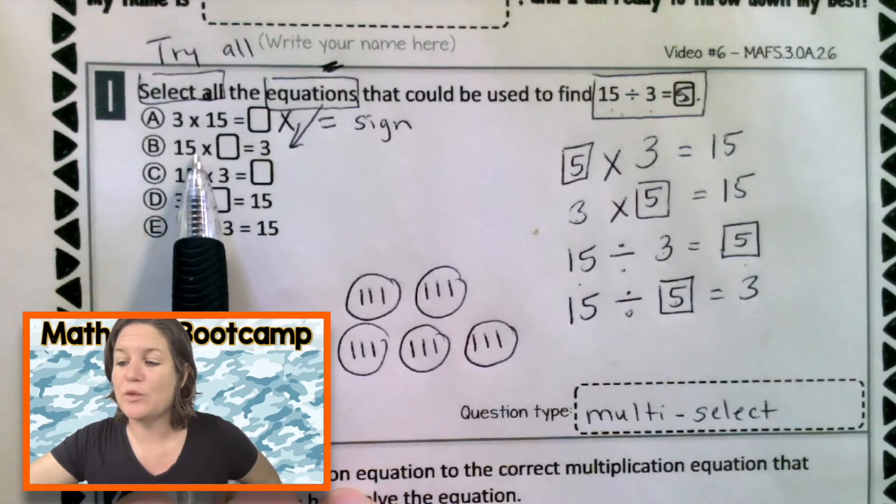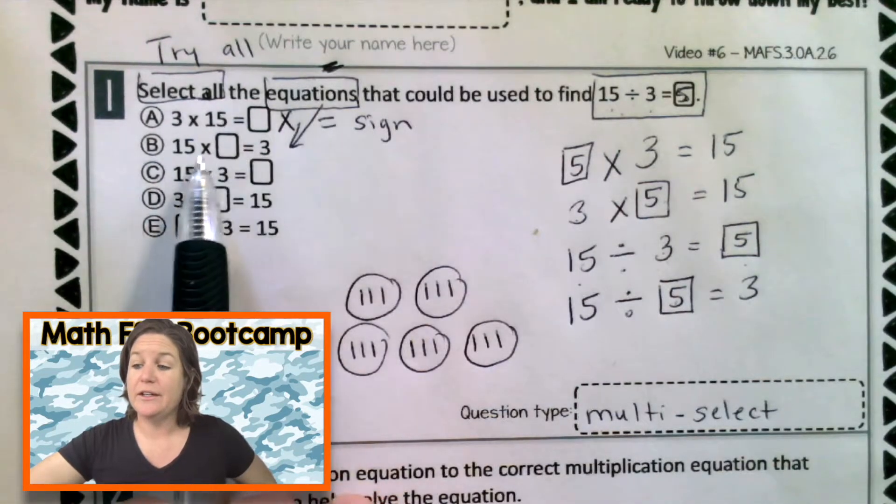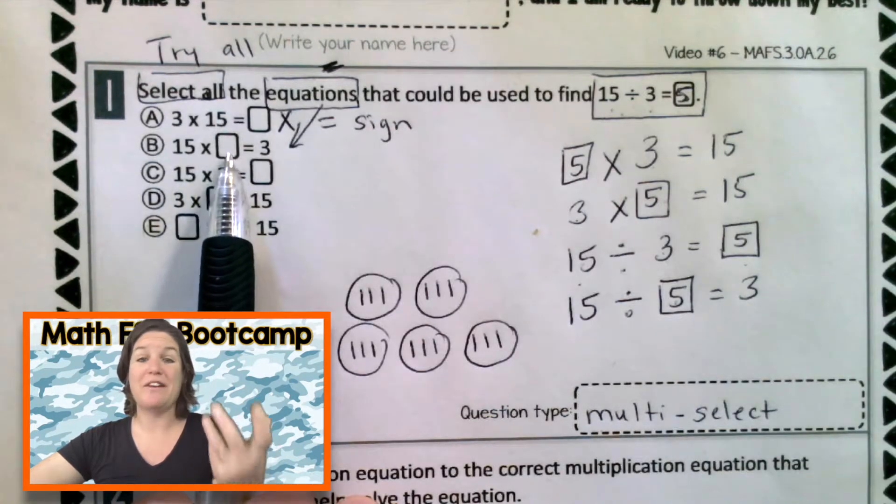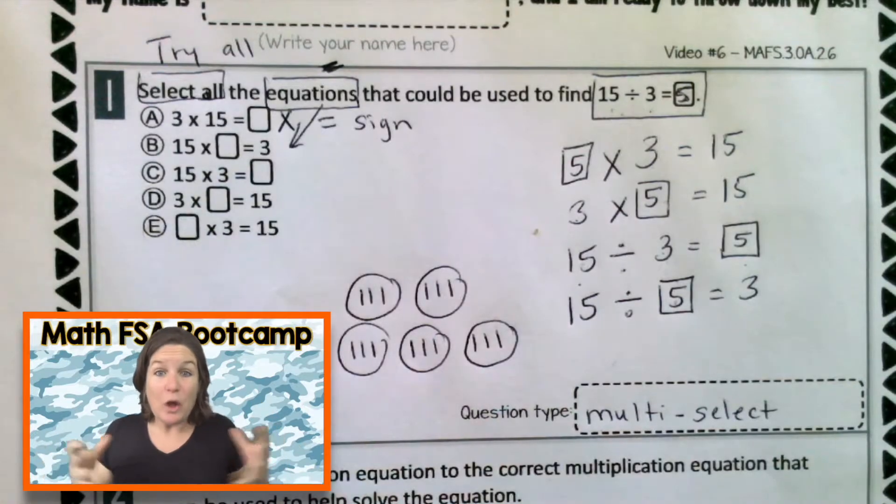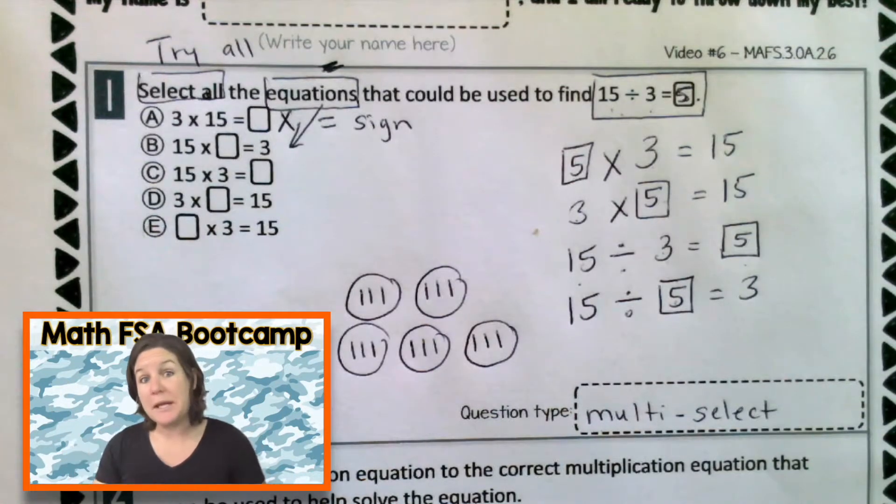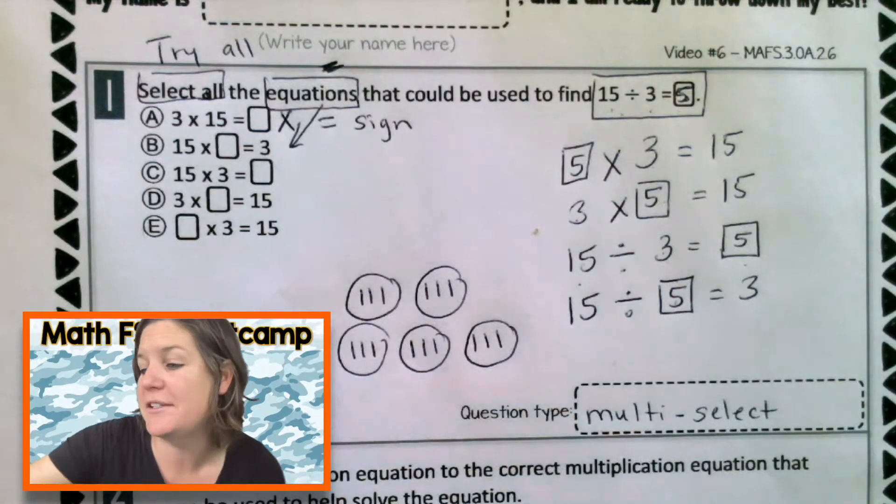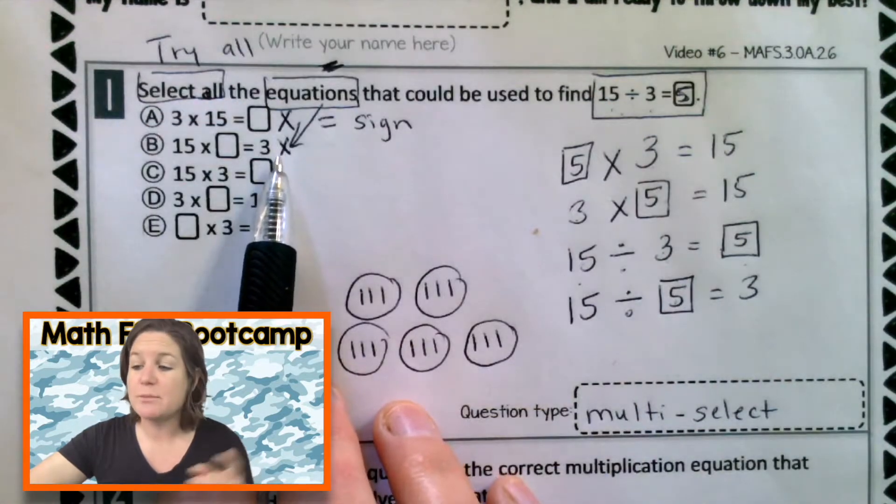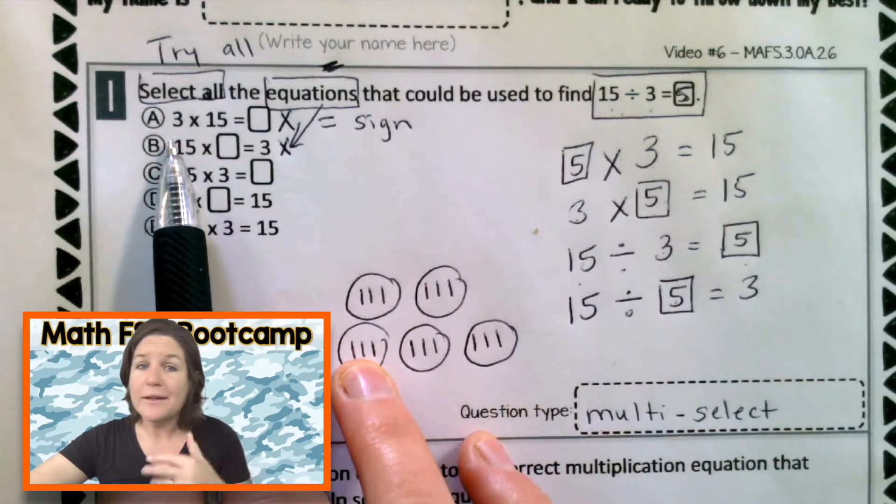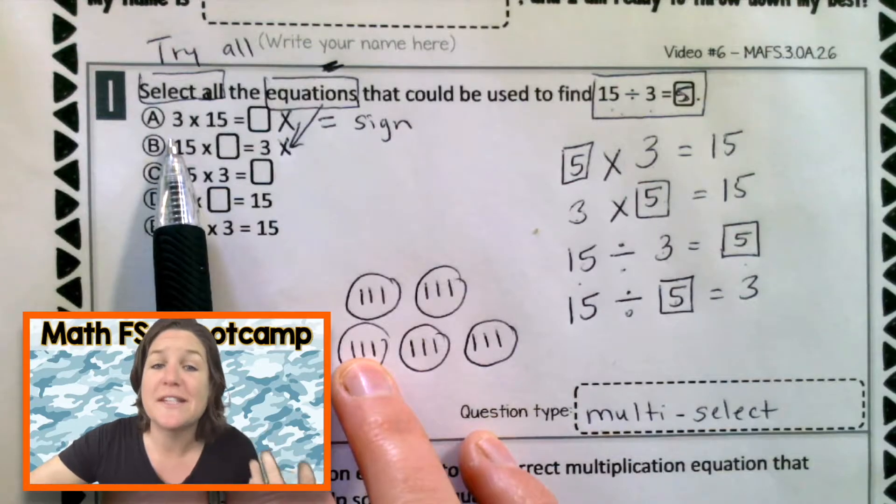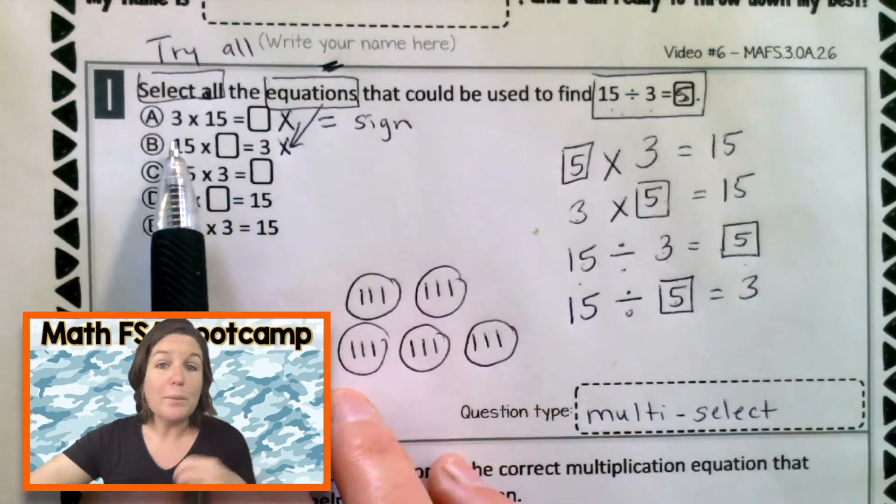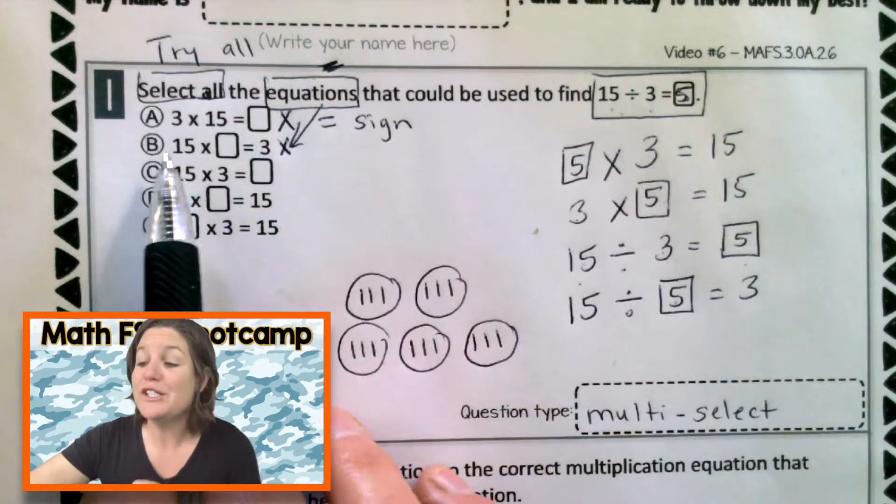15 times what equals 3? Well, if we are multiplying 15 times our missing value of 5, that would be again way greater than 3. So what can we do with choice B? Eliminate. Remember that when we eliminate, to put your X's over here, not on top of the answer choices. Why? Because a computer is going to scan your answers. And if you put an X over there, they might think you meant to pick that one. No, we didn't. We just eliminated it.